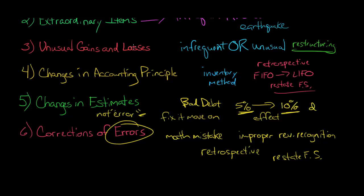We have a specific category for errors — where you made the wrong mathematical calculation or recognized revenue when you shouldn't have — and that you actually restate, just as you would with a change in accounting principle. And these are the six categories of irregular items.